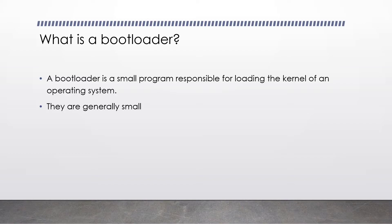Simply put, the bootloader's job is to load our kernel into memory, switch the processor into 32-bit Protected Mode, and then execute our kernel. The bootloader generally uses functions available in the BIOS to assist itself. All you need to know is the bootloader's job is to load our kernel. The BIOS loads the bootloader, and the bootloader loads the operating system.